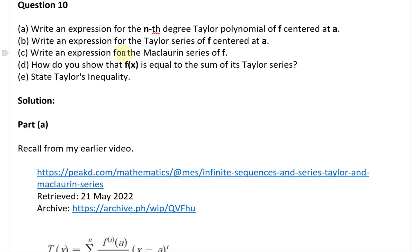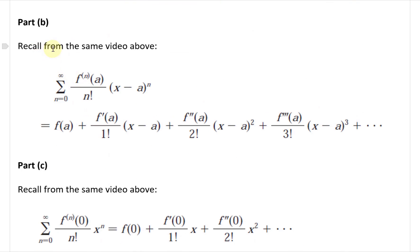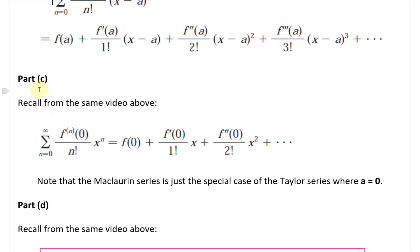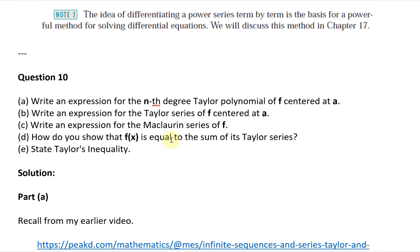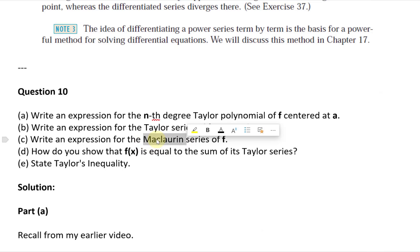For part C, write an expression for the Maclaurin series of F. Recall from the same video: the Maclaurin series is the summation from n equals 0 to infinity of the nth derivative of F at 0, divided by n factorial, times x to the power of n. The only change is that A equals 0. This expands to F of 0 plus F prime of 0 over 1 factorial times x, plus F double prime of 0 over 2 factorial times x squared, and so on. The Maclaurin series is just a special case of the Taylor series where A equals 0. It's used frequently and hence given its own name, but both are Taylor series.